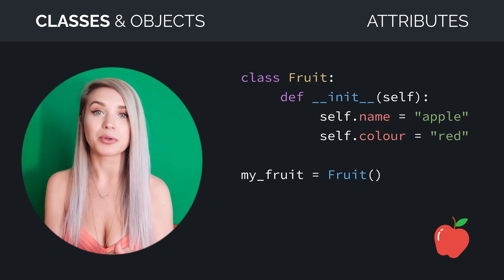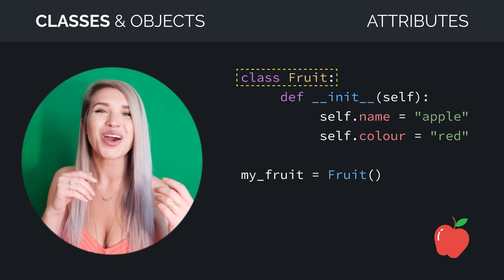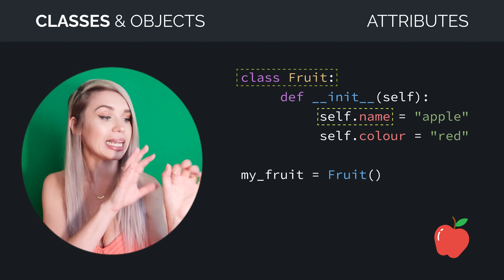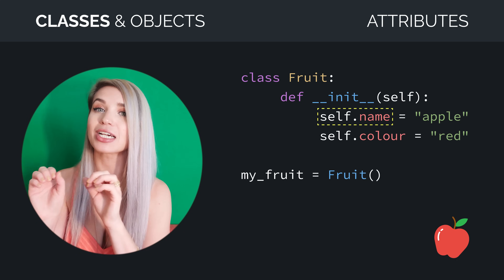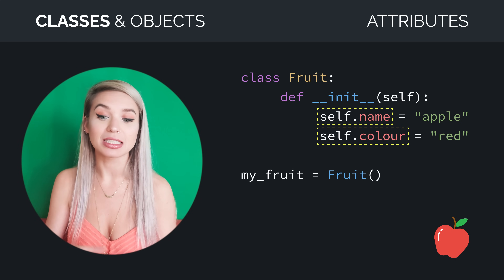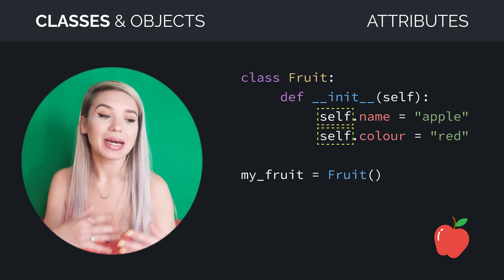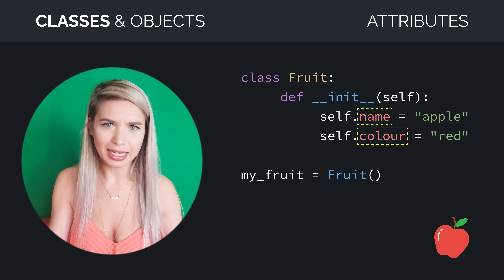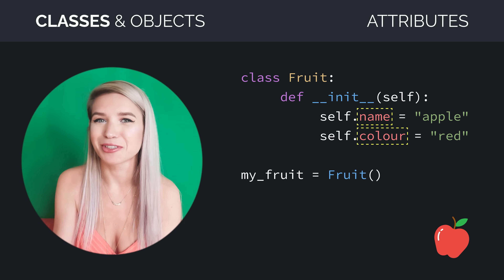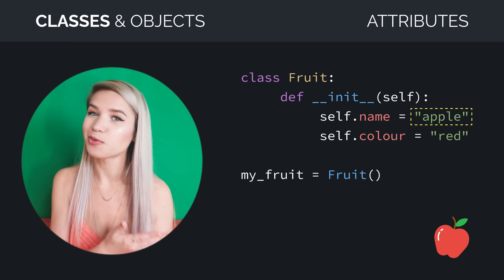The following example represents the class fruit, where we can find two different attributes: name and color. We can create attributes by using the self parameter, followed by the name of the attribute, and then we assign it to a value of our choice. In our case, apple and red.